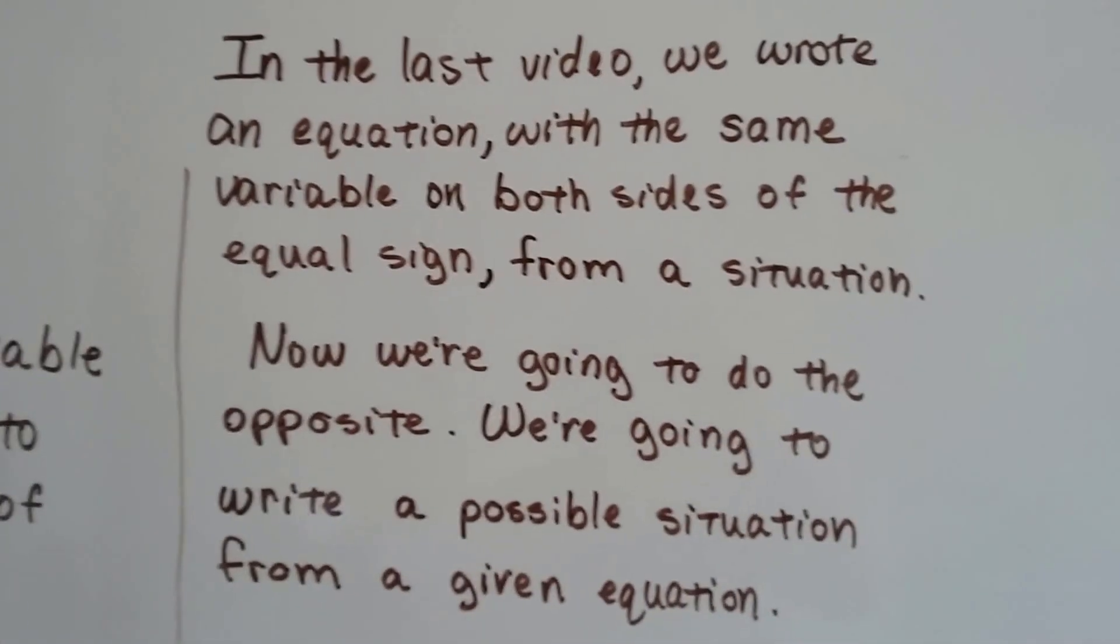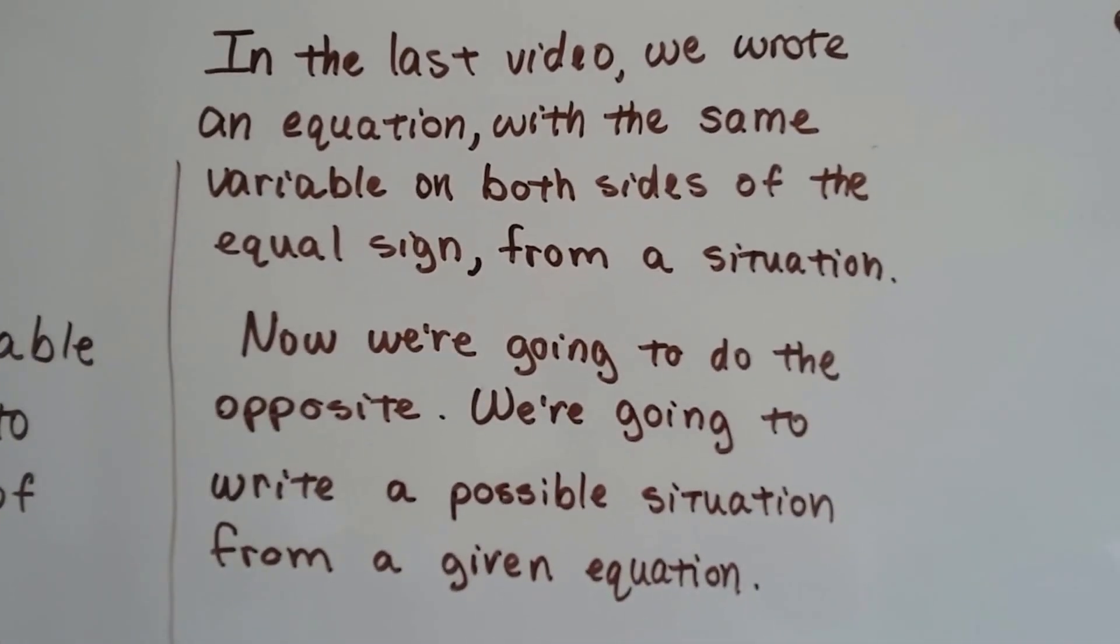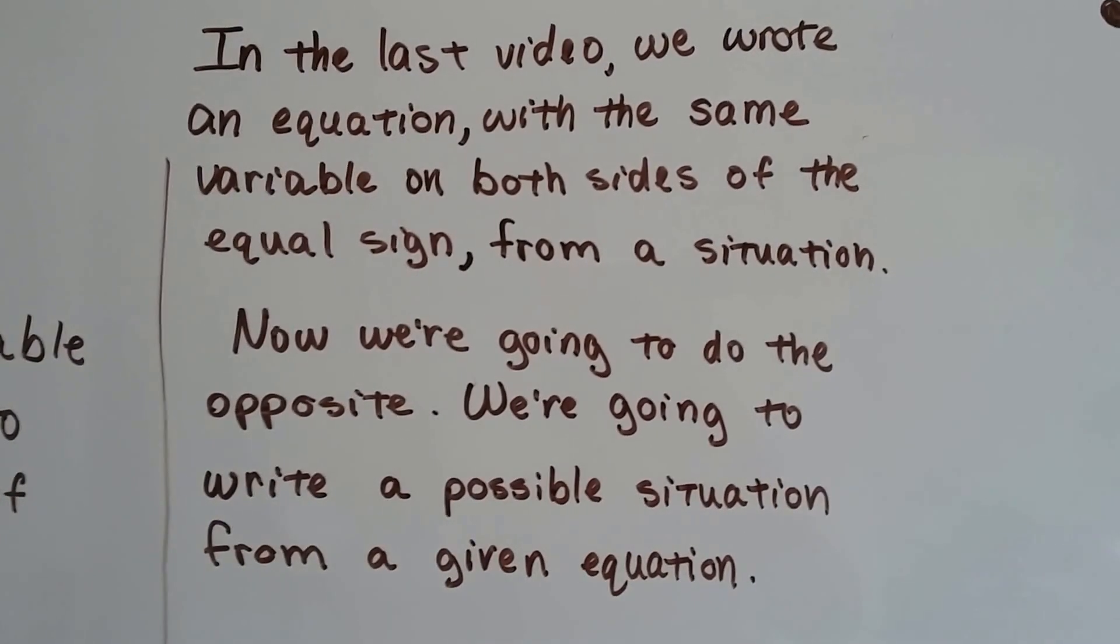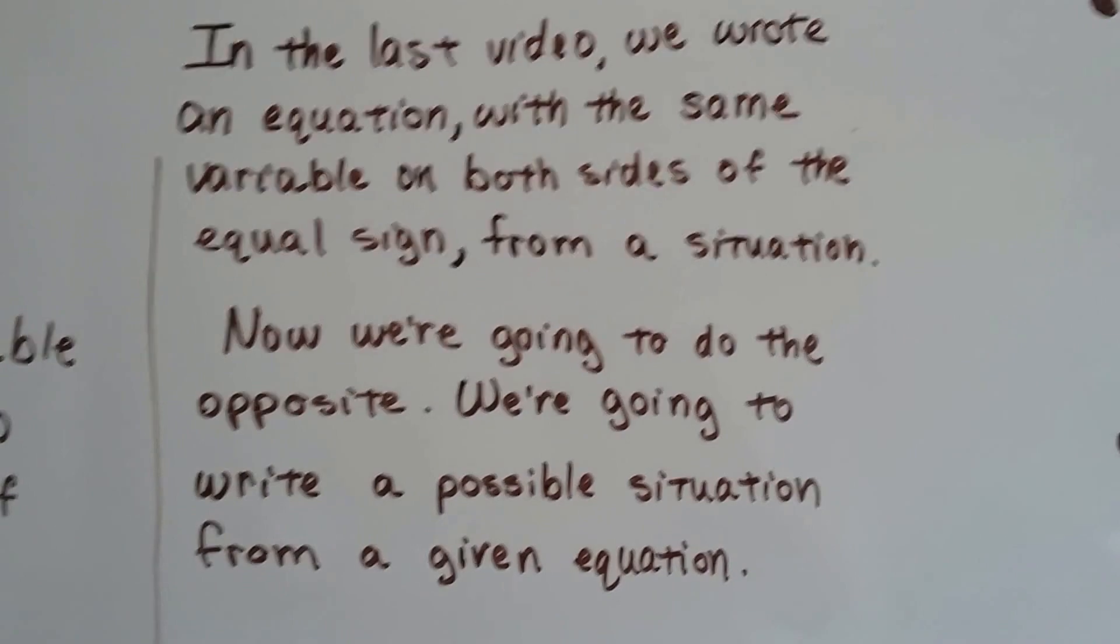In the last video, we wrote an equation with the same variable on both sides of the equal sign from a situation. Now we're going to do the opposite. We're going to write a possible situation from a given equation.